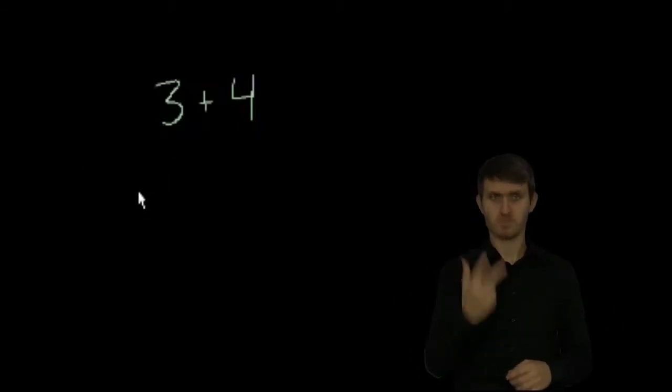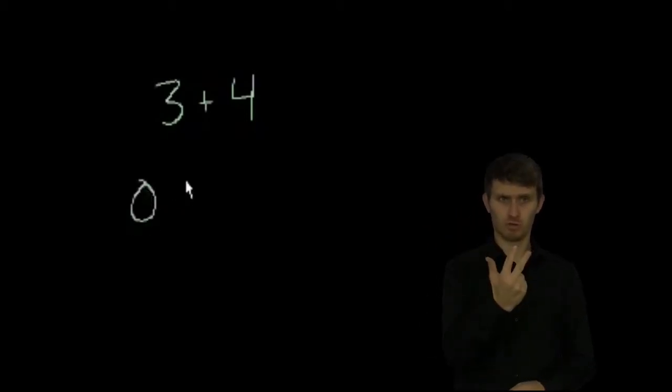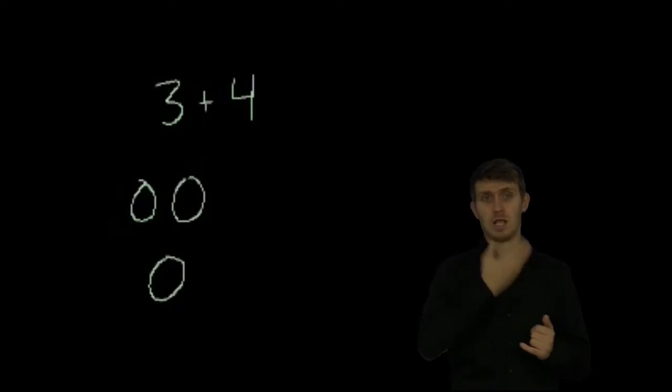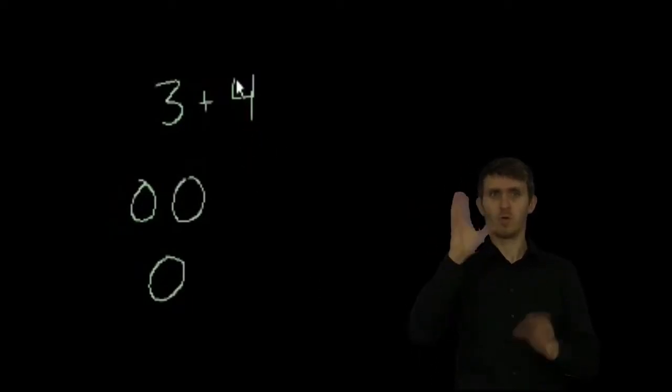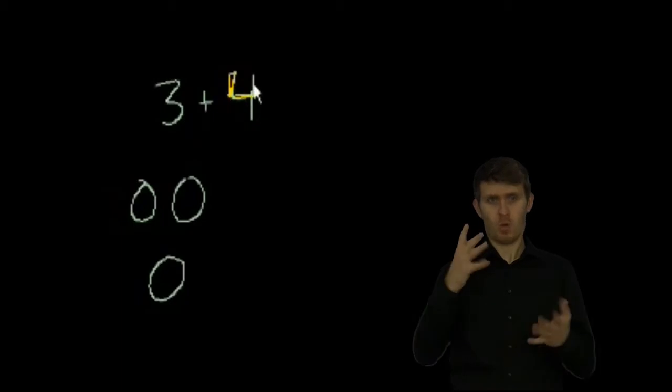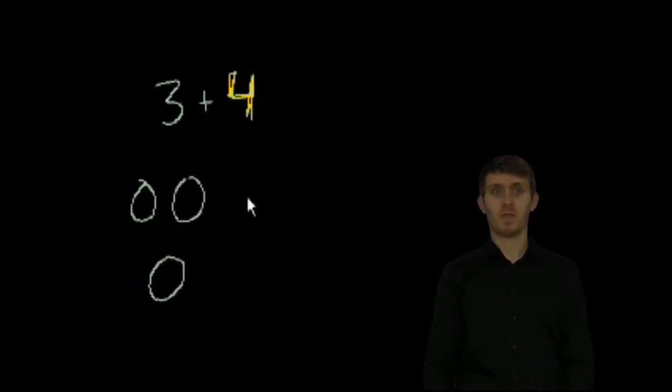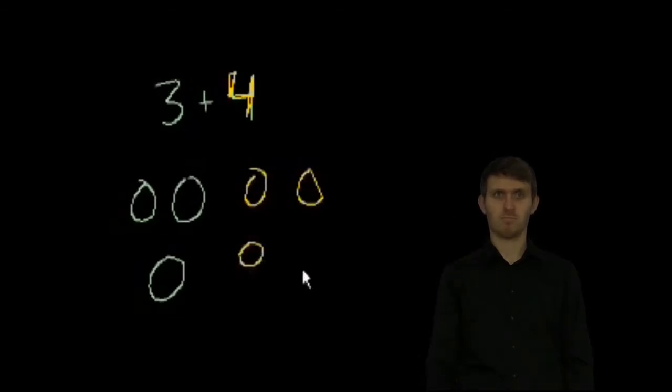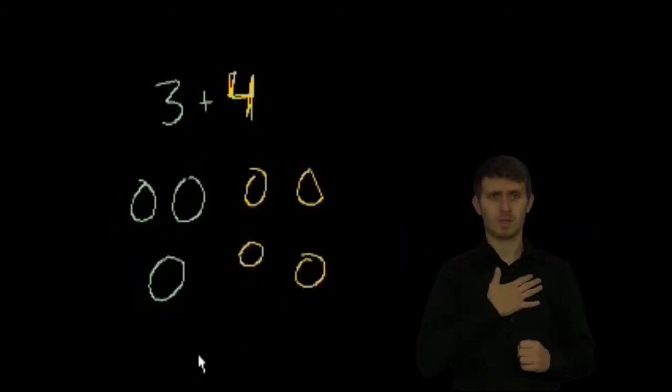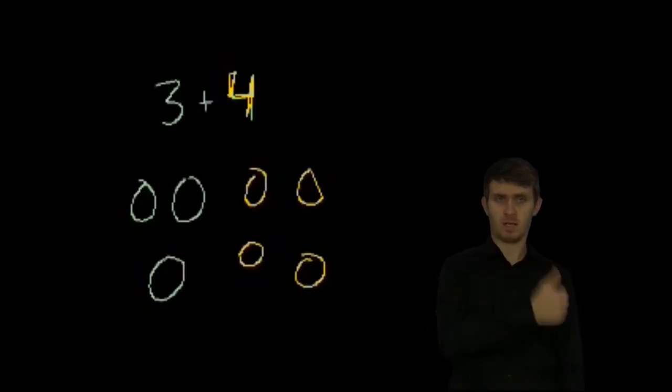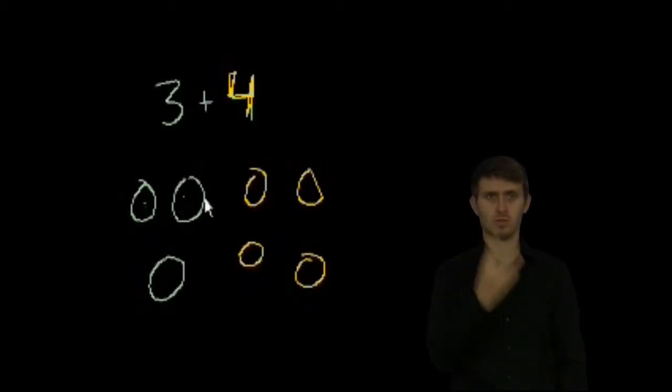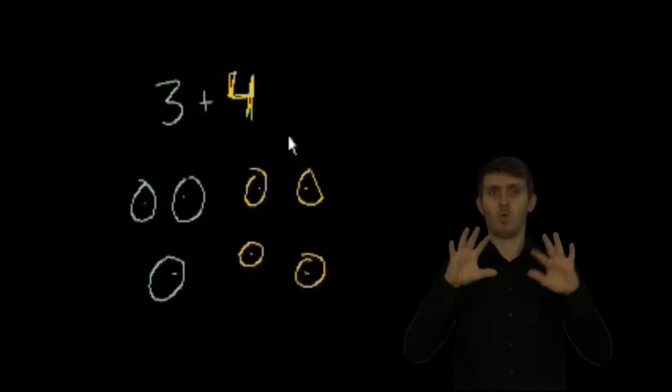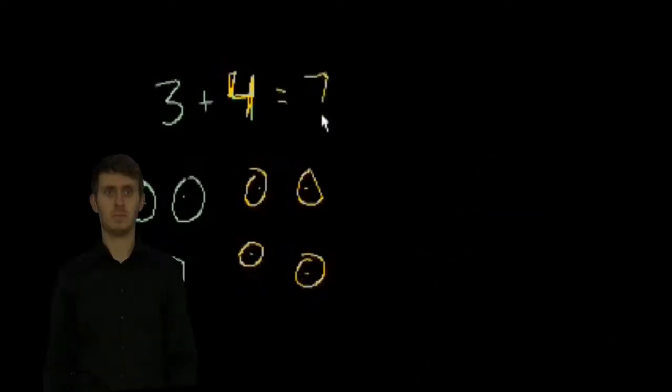So let's say I have three avocados. One, two, three. And let's say you were to give me four more avocados. Let me put this four in yellow so you know that these are the ones you're giving me. One, two, three, four. So how many total avocados do I have now? That's one, two, three, four, five, six, seven avocados. So 3 plus 4 is equal to 7.